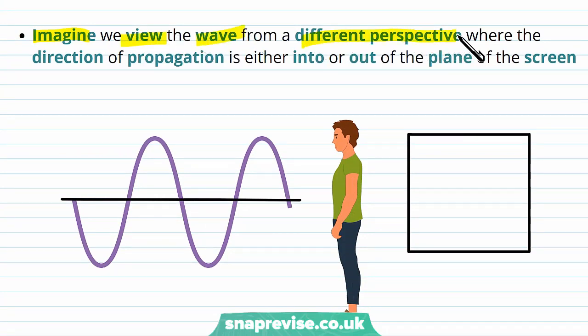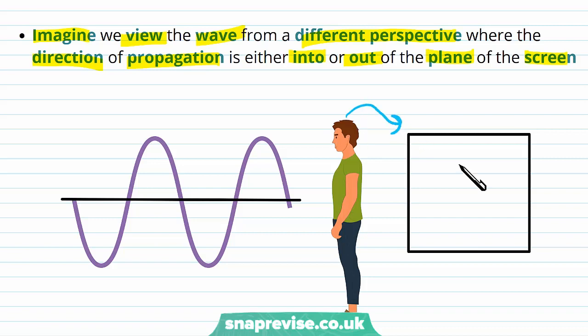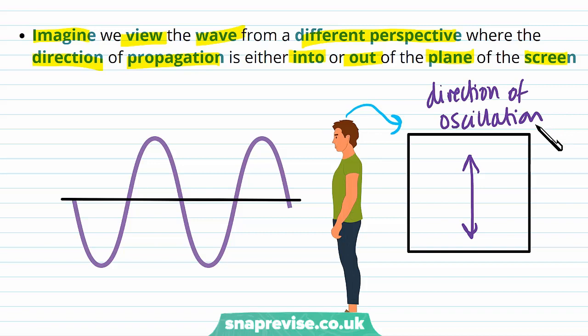Now imagine we view the wave from a different perspective where the direction of propagation is either into or out of the plane of the screen. From this viewing angle, the direction of oscillation appears to go up and down, and the direction of propagation is out of the screen — like the wave is coming towards you.